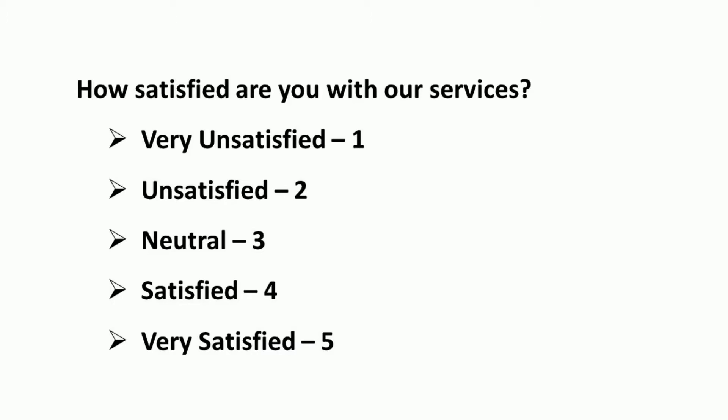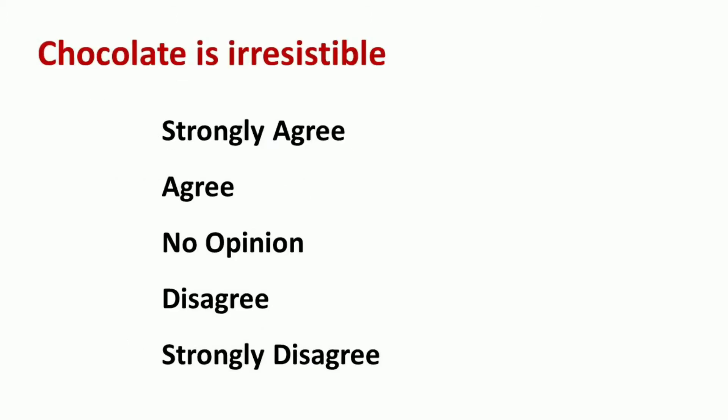We can rank the available options by putting numerical numbers like 1 for very unsatisfactory, 2 for unsatisfactory, 3 for neutral, 4 for satisfactory, and 5 for very satisfactory. This is also an example of a Likert scale, which gives another illustration of how you can't be sure about the interval with ordinal data.